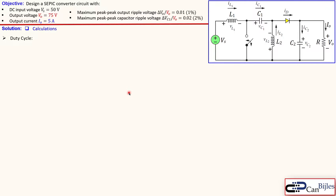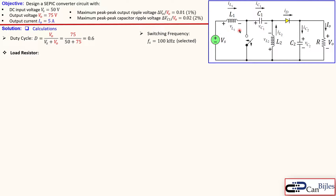We start with the calculations for our duty cycle. The first step uses the exact same formula as for the buck converter, looking at the output and input voltages, which gives us 0.6 or 60%. The next step is to select a switching frequency — we'll select 100 kHz in this example. This switching frequency applies to the switch.